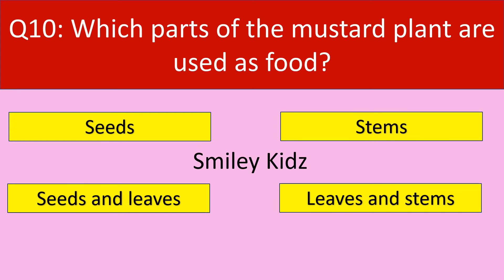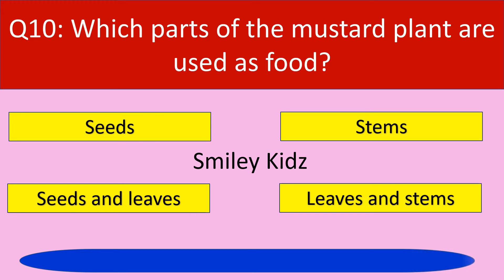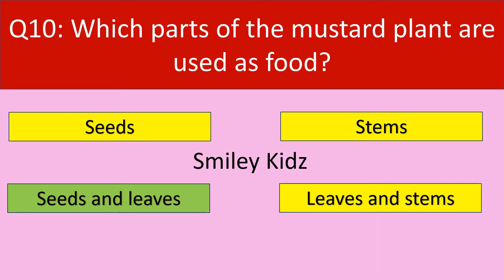Question number 10. Which parts of the mustard plant are used as food? Options are seeds, stems, seeds and leaves, leaves and stems. Your time starts now. The correct answer is seeds and leaves. Parts of the mustard plant used as food are seeds and leaves.